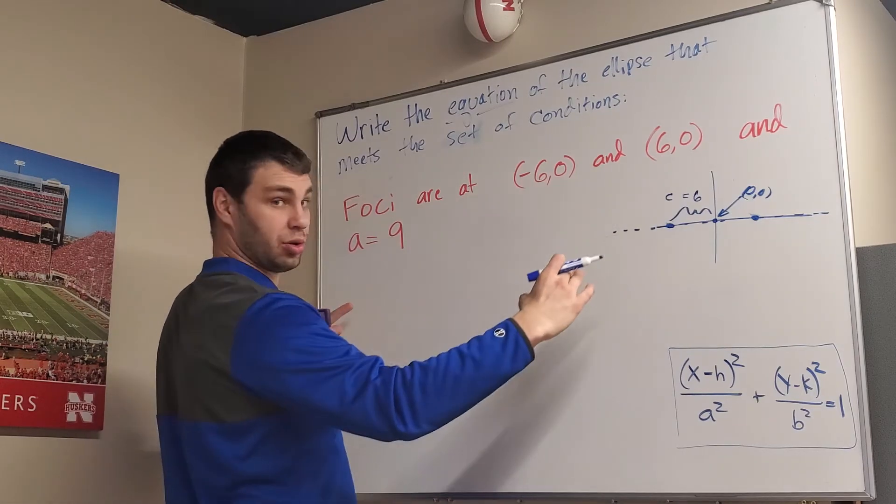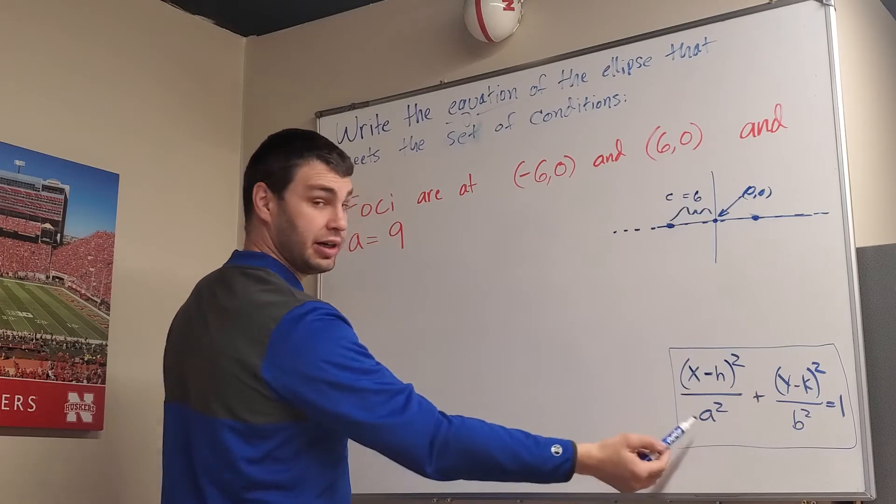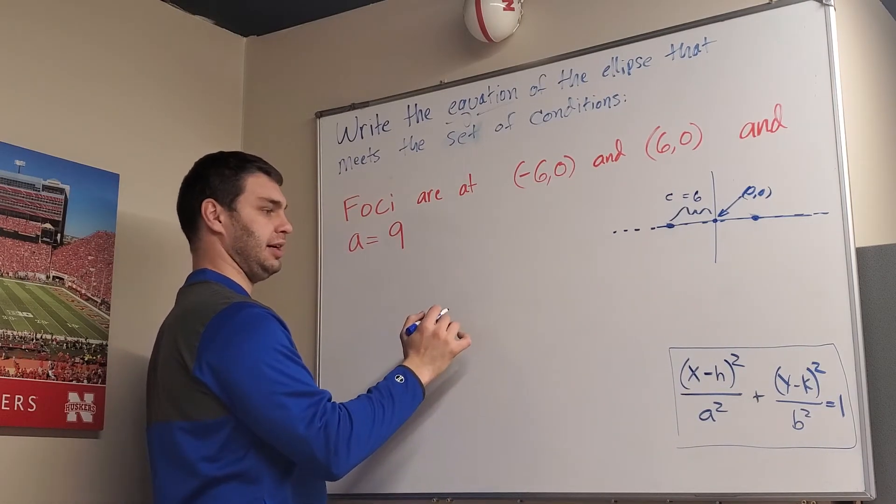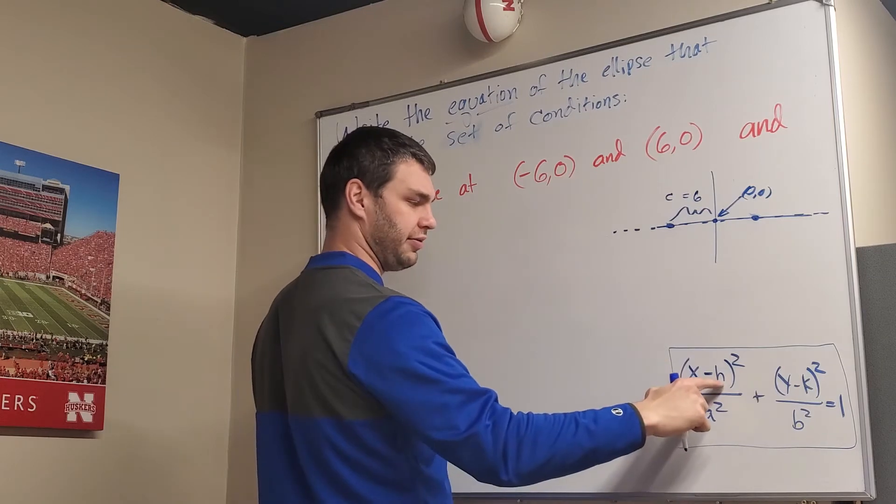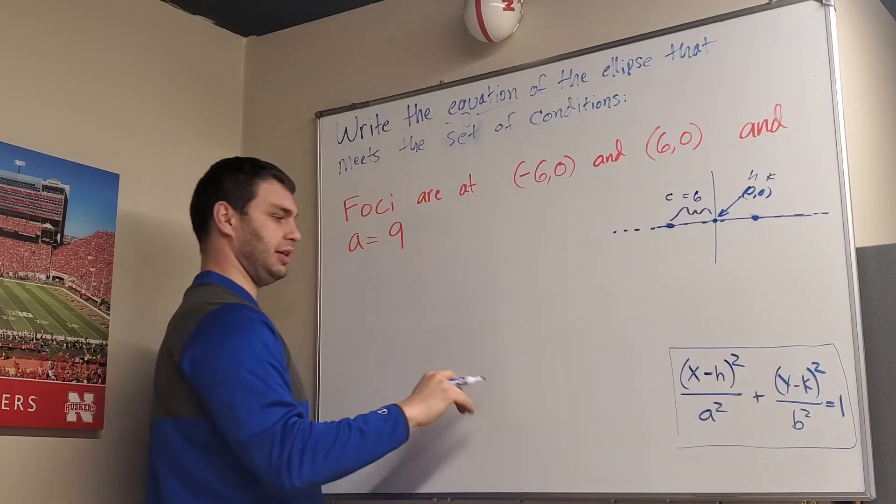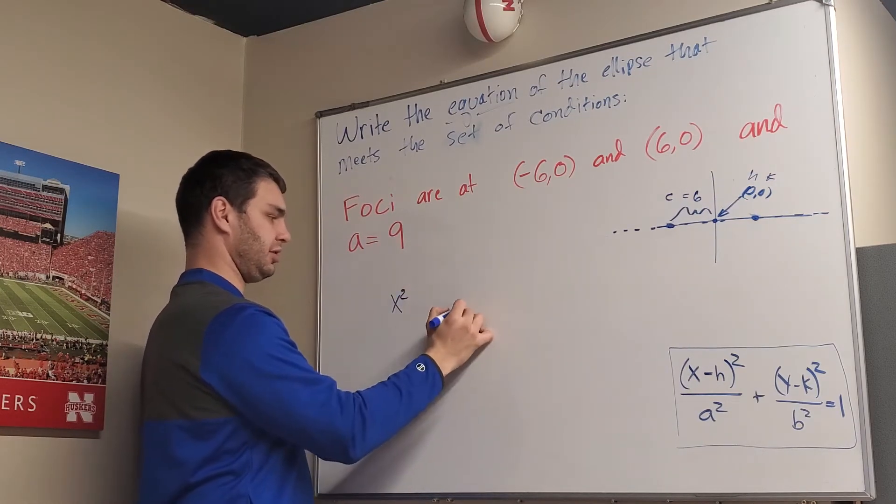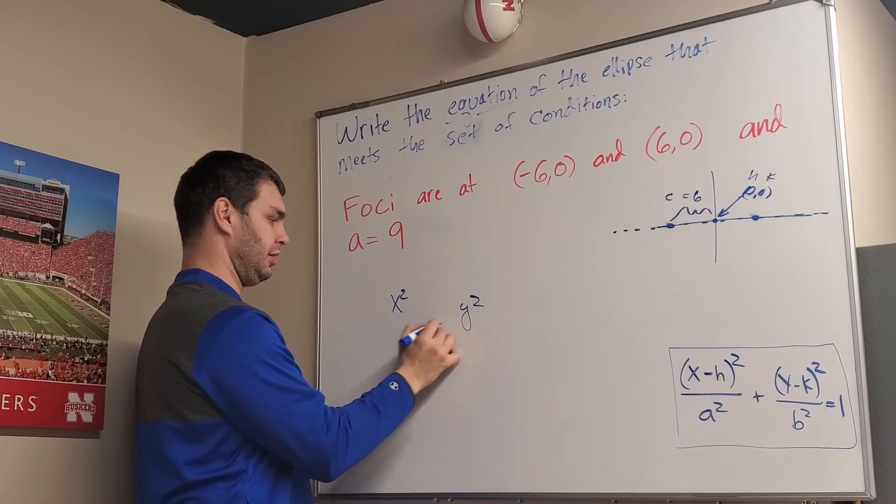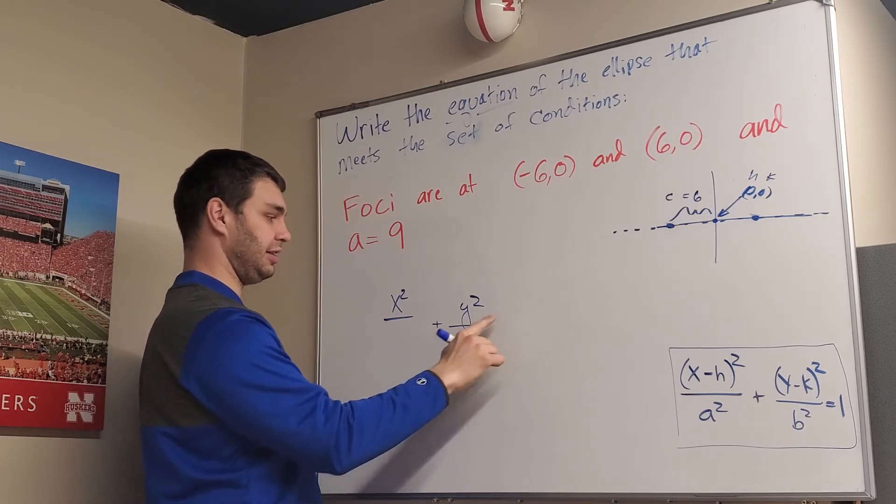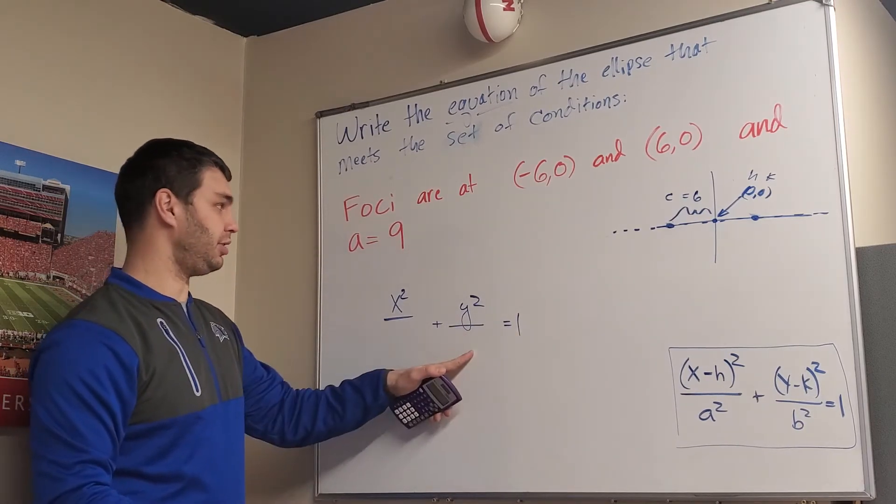I know that because the foci are always on the major axis. So because it's the horizontal way, I know the x has to come first and the a² is going to be underneath that. If I remember that h and k are my center here, instead of having a quantity squared, it's just going to be x² and y². I would put a² underneath that, b² here, and this equals 1. So really the only things I need to figure out left are a² and b².